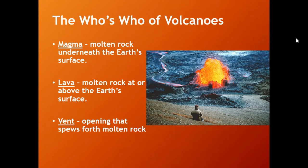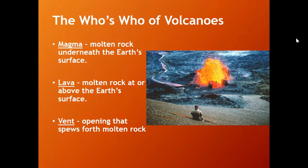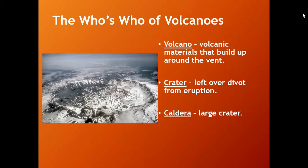You'll often hear me use the term magma, but know that if it's at or near the Earth's surface, lava can also — and probably should — be used. Of course, we hear a lot about lava in Hawaii because a lot of volcanic activity is taking place there and they see lava on the surface. Lava creates lots of different rocks. The term volcano describes the materials that build up around the vent, and of course the more erupted material, the larger the volcano. There are different types of volcanoes we're going to talk about.